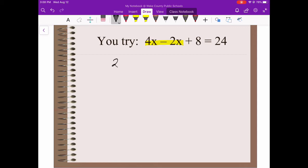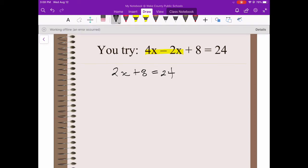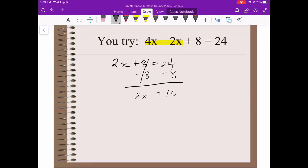4x minus 2x leaves us with 2x. So we're going to have 2x plus 8 equals 24, and now we're ready to start solving our equation. Reverse order of operations means I need to get rid of addition first. How do I un-add? I subtract. Making sure I stay balanced, I subtract 8 from both sides. 8 minus 8 is 0.